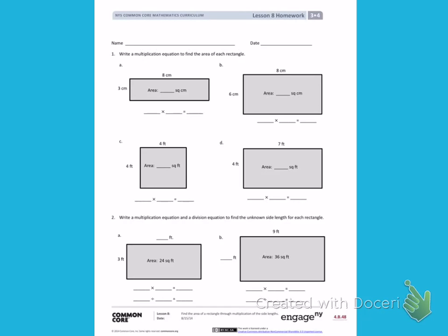Number 1. Write a multiplication equation to find the area of each rectangle. Letter A. I see one side length is 8 centimeters and one side length is 3 centimeters. To find the area, I can multiply those two numbers together.